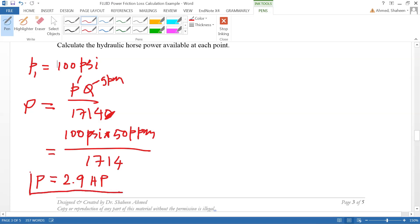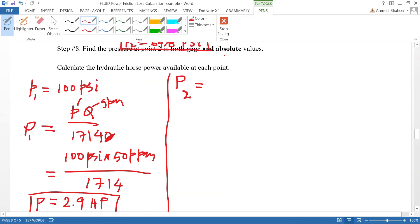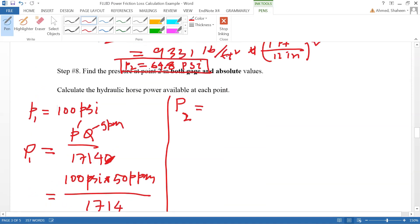If we calculate power at point 2, P2, which is power capital P, p1 power small p pressure, so we can write down basically pressure at point 2 we calculated 64.8 psi times 50 gallon per minute divided by 1714. I think this was calculated, let's get that value, 1.89.